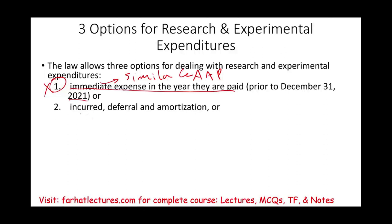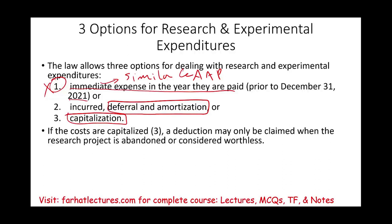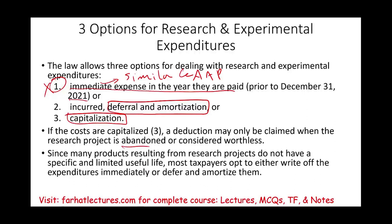Option two is to defer and amortize the expenses. Option three is to capitalize them — treating them as an asset. But if option three, capitalization, is undertaken, a deduction may only be claimed when the research project is abandoned or considered worthless. Since many products resulting from R&D don't have a specific and limited useful life, most taxpayers either opted to write off the expenditure immediately — which is no longer available — or defer and amortize, which is what's available now.